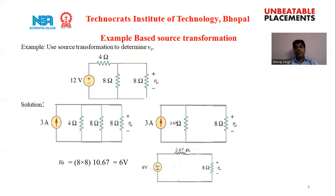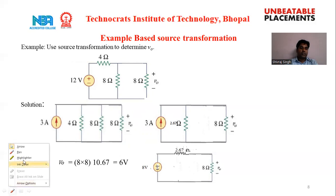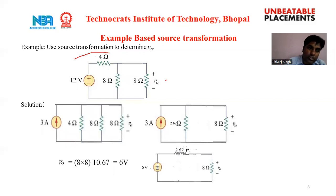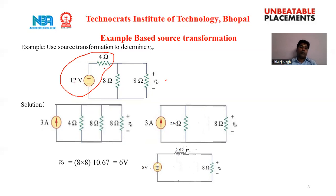Now we will solve some examples using the source transformation method. In the first example, a 12 volt source is connected in series with a 4 ohm resistance, alongside an 8 ohm resistance, and we need to find V0. First, we convert the 12 volt and 4 ohm combination into a current source, where I equals 12 divided by 4, which equals 3 ampere.